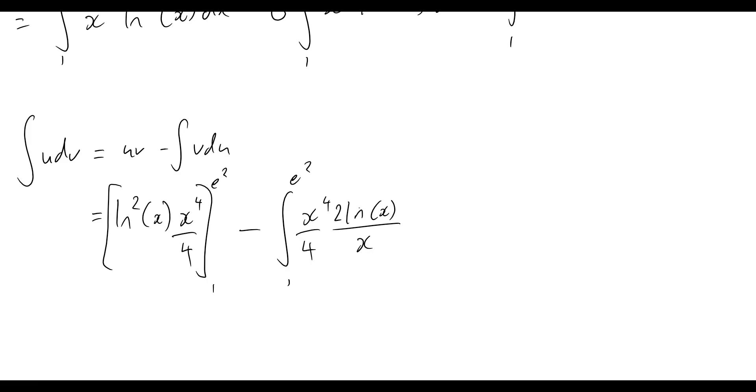So that's our v and that's our du. Differentiating the natural log squared of x gets you 2 ln of x on x. And let's not forget dx there on the end as well.